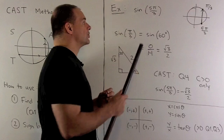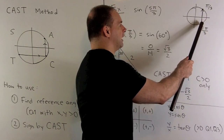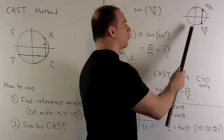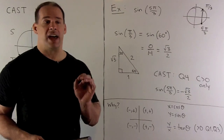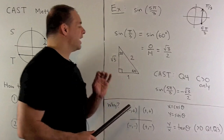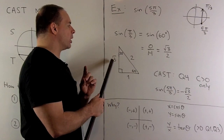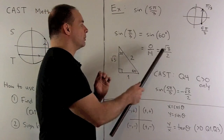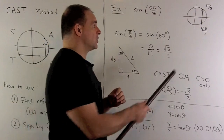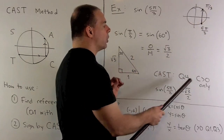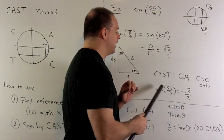Let's try a concrete example: sin(5π/3). Plotting 5π/3 places it in quadrant four. The reference angle is found by moving straight up parallel to the y-axis, giving π/3. So we find sin(π/3): using the 30-60-90 triangle, sine is opposite over hypotenuse = √3/2. Now applying CAST: in quadrant four, cosine is the only positive value (C), so sine must be negative. Therefore sin(5π/3) = −√3/2.